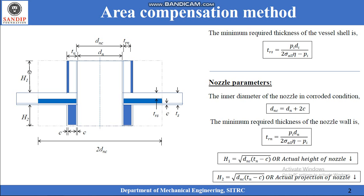Similarly, H1 and H2 are the heights of the nozzle outside the shell and inside the shell respectively. They are calculated as either √(DNC · (TN − C)) or the actual height of the nozzle, whichever has the lower value.